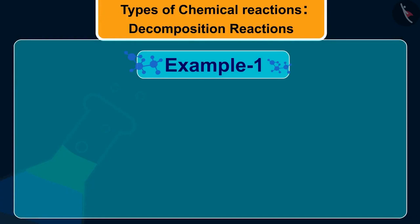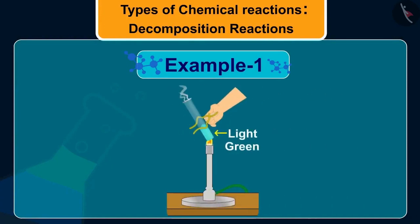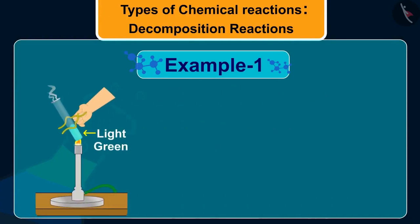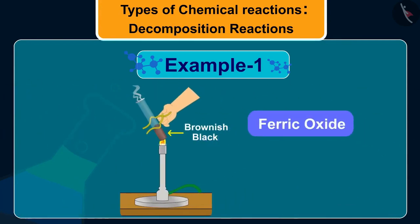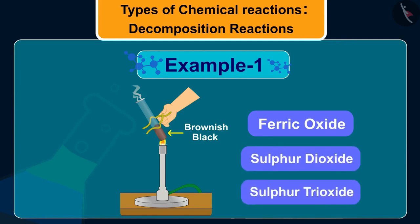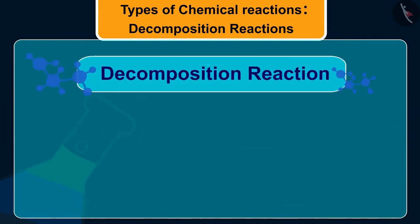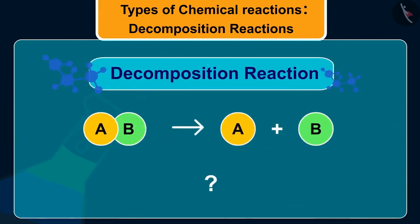So, we can say that ferrous sulfate crystals decompose to form ferric oxide, which is brown in color, sulfur dioxide and sulfur trioxide. So, students, this is an example of decomposition reaction.